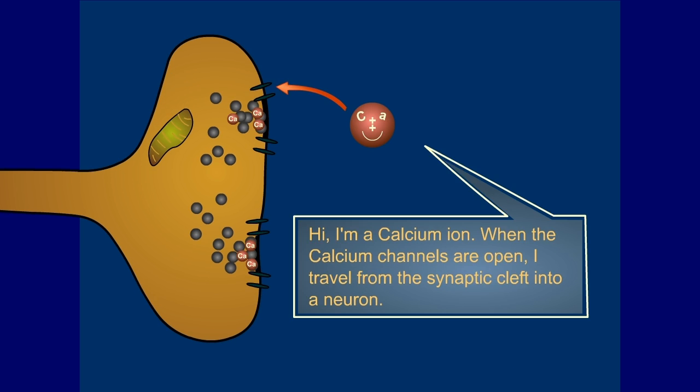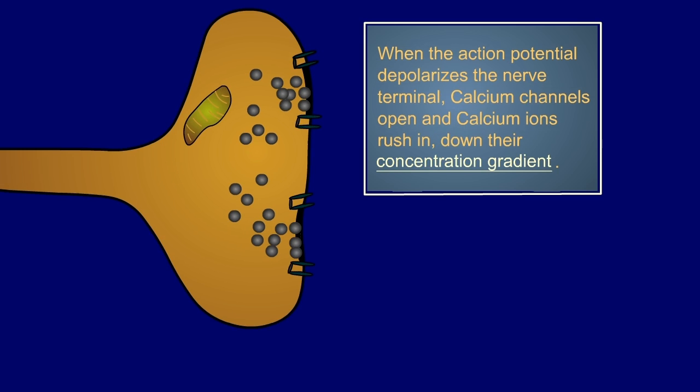Hi, I'm a calcium ion. When the calcium channels are open, I travel from the synaptic cleft into a neuron. When the action potential depolarizes the nerve terminal, calcium channels open and calcium ions rush in, down their concentration gradient.